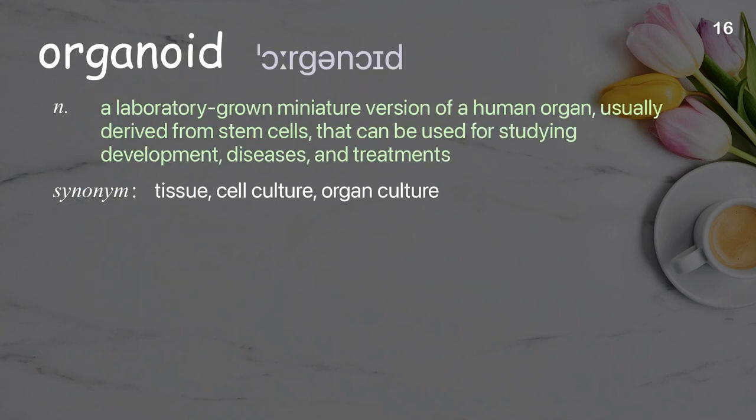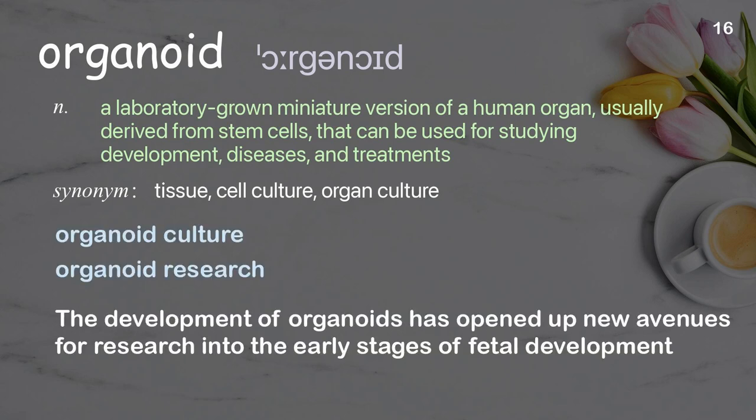Organoid: a laboratory-grown miniature version of a human organ, usually derived from stem cells, that can be used for studying development of a human organ, diseases, and treatment. Examples: organoid culture, organoid research. The development of organoids has opened up new avenues for research into the early stages of fetal development.